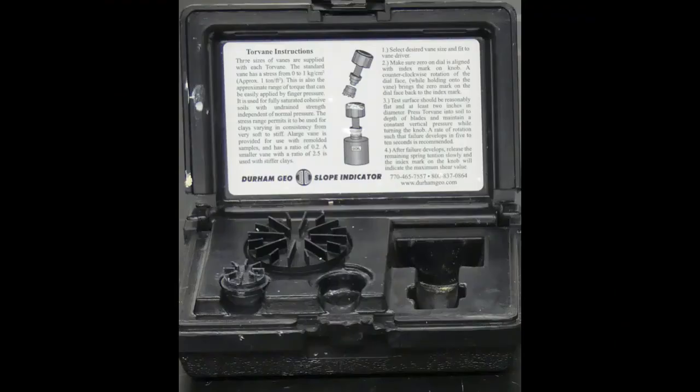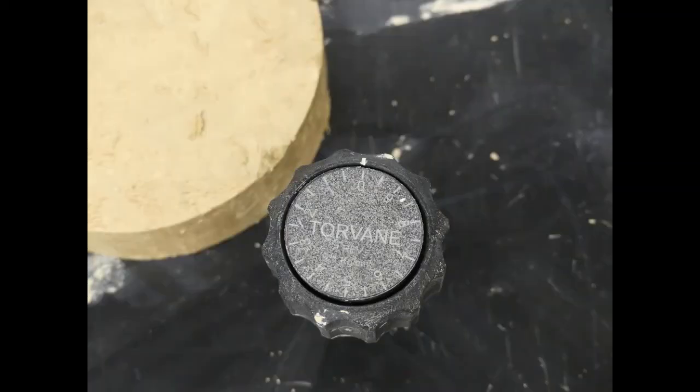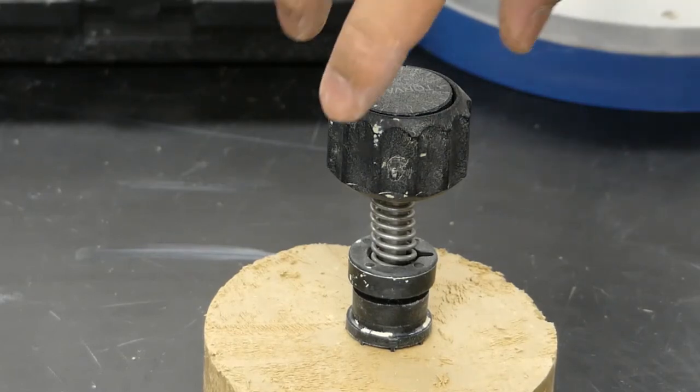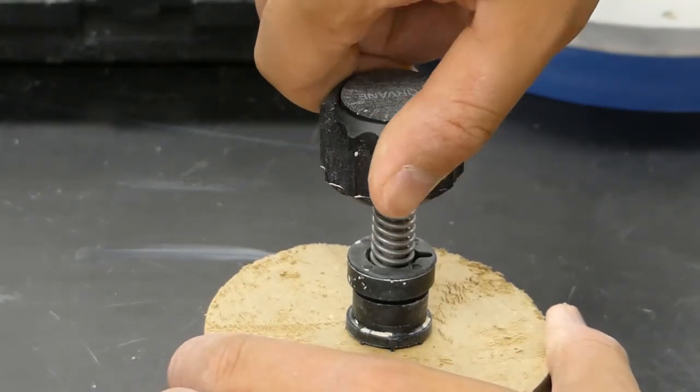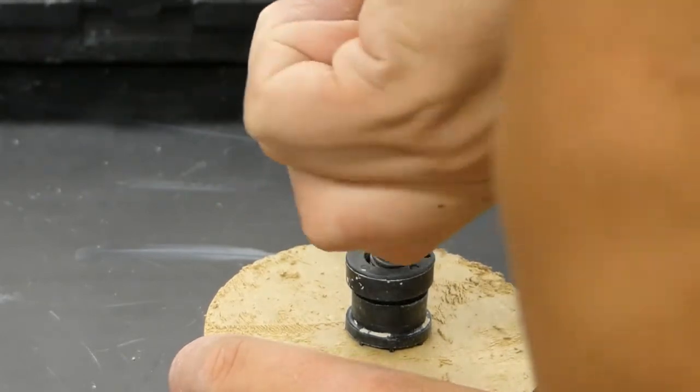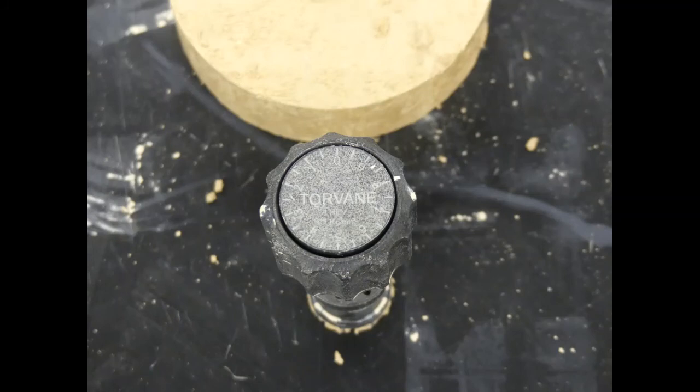Lastly, we will be talking about the torvane. In our lab, the torvane has three different vane sizes, and depending on which vane we use, we will have either a ratio of 2.5, 1, or 0.2. After choosing our vane size, we zero the dial on the torvane and insert the vane blades into the soil specimen. Turn until failure, it is recommended that failure occur within 5 to 10 seconds. In this demonstration, we used a standard vane size with a ratio of 1, so our shear value is 8 kilograms per square centimeter.